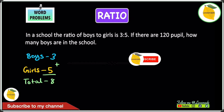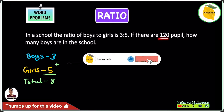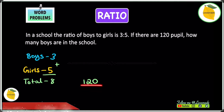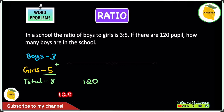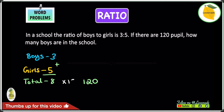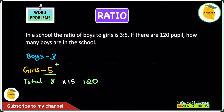The actual total number of people in the school is 120. We write that next to the 8. Now we divide the actual total by the ratio total: 120 divided by 8 gives us 15. That means to get from 8 to 120 you multiply by 15.